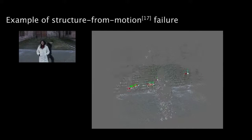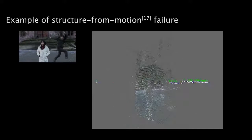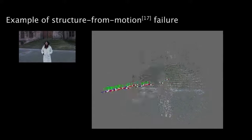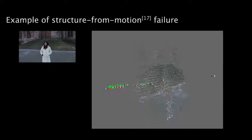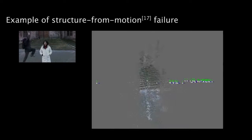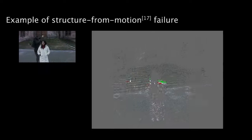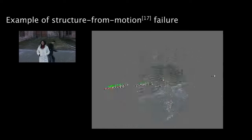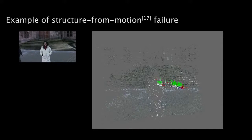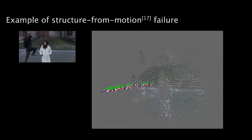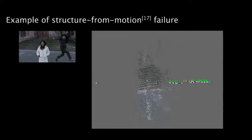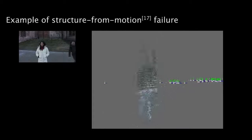We exemplify with this failed reconstruction. Only 60% of the cameras could be recovered, and the corresponding recovered structure is flat. There are also cameras that are located behind the scene. Our method does not require a complete camera calibration, and for this reason it is not affected by these limitations. Thank you for your attention.